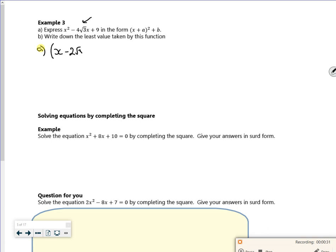Take away the square, so if I square my 2 root 3 all squared, it's 2 squared is 4, root 3 squared is 3, 4 times 3 is 12. So I'm going to take 12 off it and add on my 9.